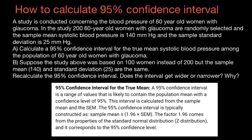First of all, let me show you the definition of the 95% confidence interval for the true mean. A 95% confidence interval is a range of values that is likely to contain the population mean with a confidence level of 95%. This interval is calculated from the sample mean and the standard error of the mean. The 95% confidence interval is typically constructed as sample mean plus or minus 1.96 times SEM, or standard error of the mean. The factor 1.96 comes from the properties of the standard normal distribution, or Z distribution, and it corresponds to the 95% confidence level.